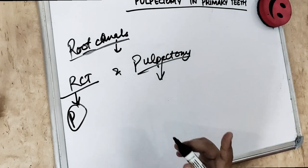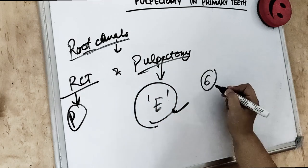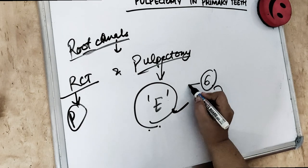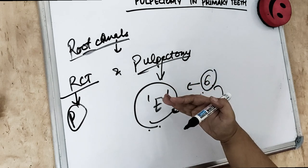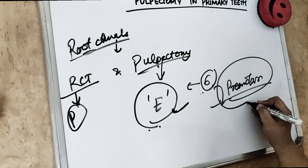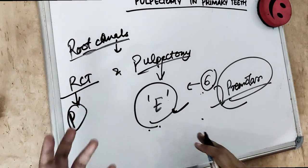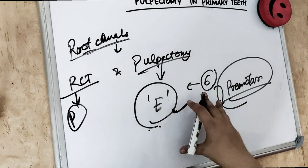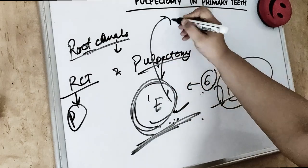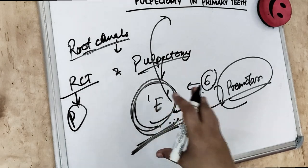In the case of the second primary molar — the e-tooth — if it is lost before eruption of the first permanent molar, the first permanent molar will drift mesially during eruption, leaving no space for the premolars. Every millimeter of this space is very important, as its loss leads to crowding and affects orthodontic extraction decisions. That is why it is important to save the second deciduous molar, and if pulpectomy is needed to save it, we are ready to do it.